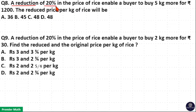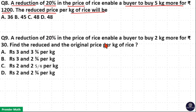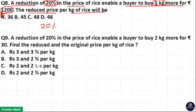A reduction of 20% in the price of rice enables a buyer to buy 5 kg more for Rs. 1200. The reduced price per kg of rice will be. This extra 5 kg is because of the 20% discount in the price, and this extra 5 kg is also based on Rs. 1200. Which means 20% of Rs. 1200 results in this extra 5 kg.